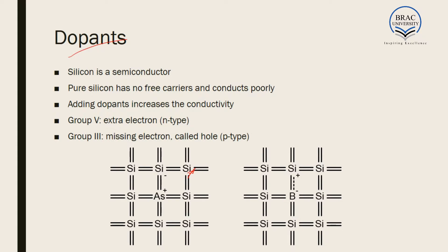We do this by introducing dopants or impurities. There are two types of dopants: the n-type and the p-type. The n-type dopant gives an extra electron, and the p-type dopant creates a place for missing electrons, where electrons from different elements can come to this missing spot. We have learned about dopants and doping in our device course in CSE 251 or AAA 205. Group 5 elements — for example, nitrogen — are called n-type dopants, and group 3 elements are called p-type dopants.